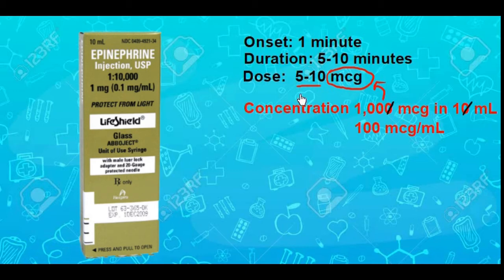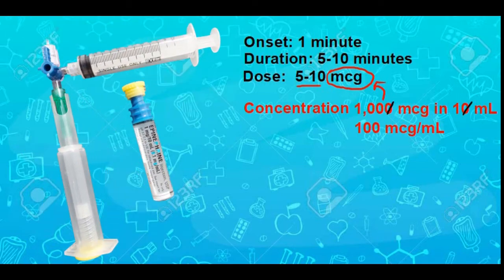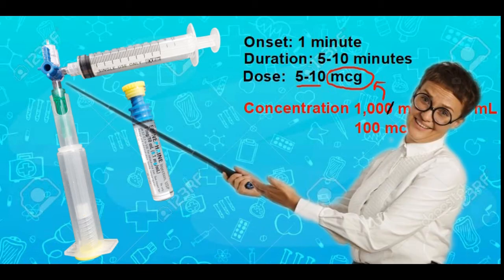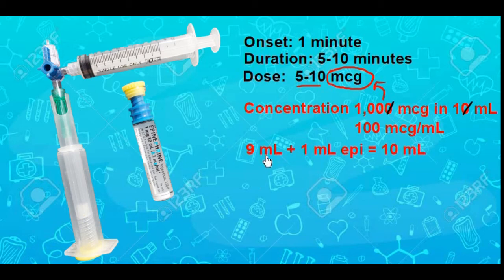We are trying to get to five to ten micrograms, and one hundred micrograms per milliliter is still a lot, so we're going to dilute this one more time. We'll do that using a ten cc syringe with a three-way stopcock. We take nine milliliters of normal saline and add one milliliter of that one hundred micrograms per milliliter epinephrine. The nine plus one gives you ten milliliters of total solution.